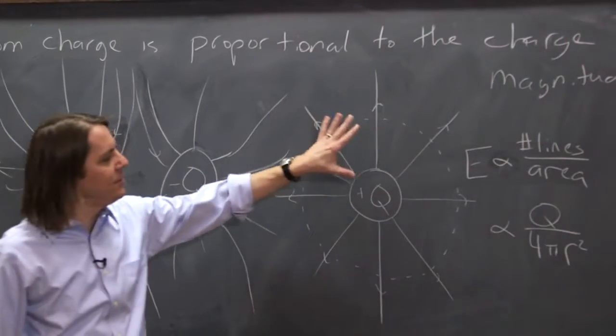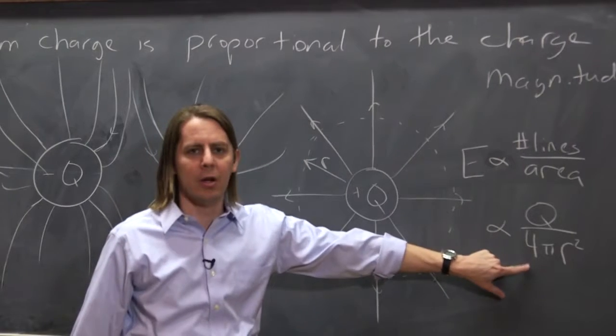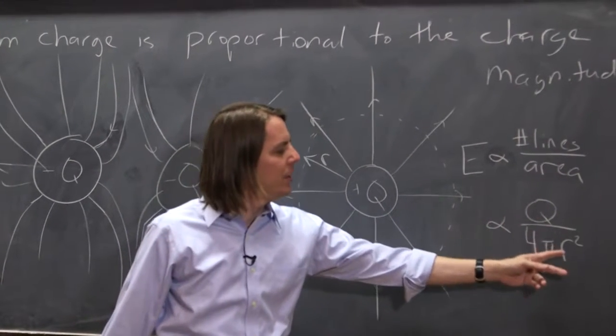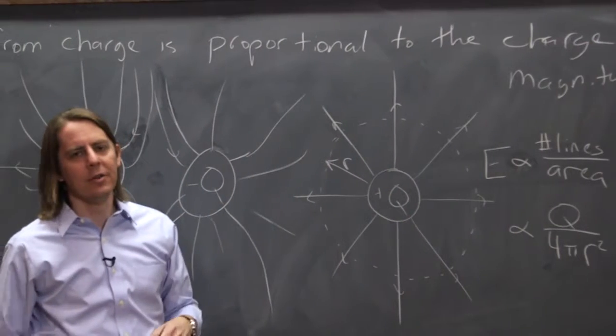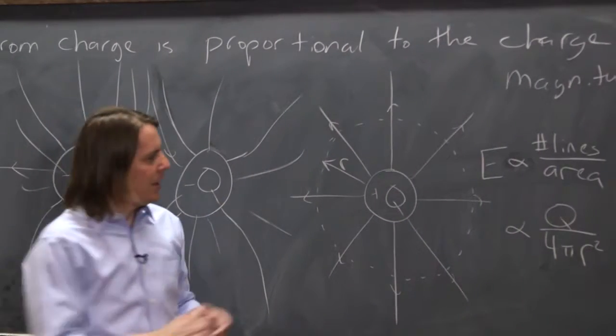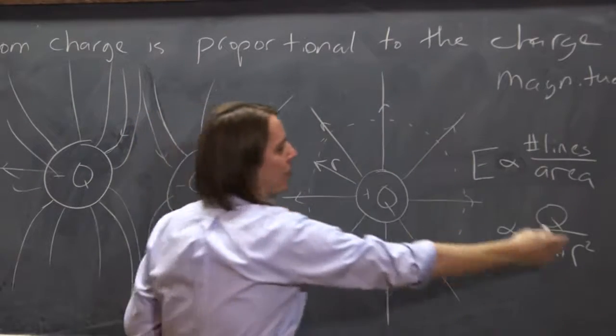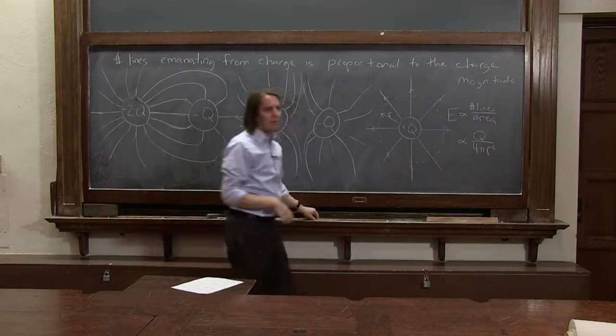So you can see that just this simple idea of field lines has reproduced, basically, Coulomb's law. That the electric field is proportional to the charge, and it's proportional as 1 over r squared as you move away from a point charge. And that's simply because the lines get lower and lower in density as you move away as 1 over r squared, just like we know the electric field does.